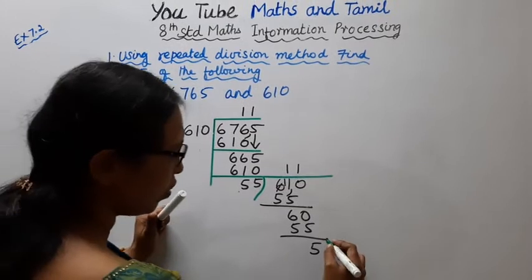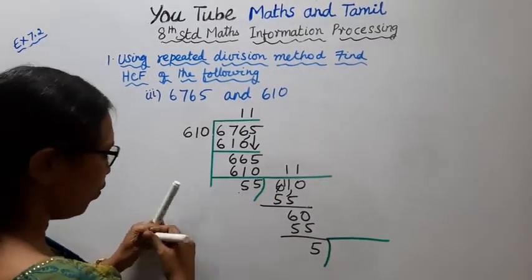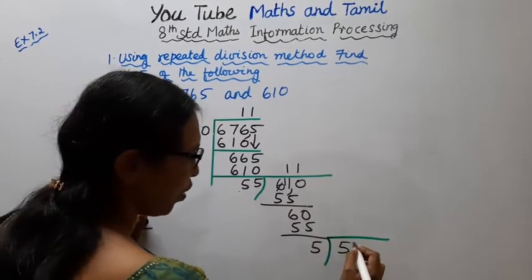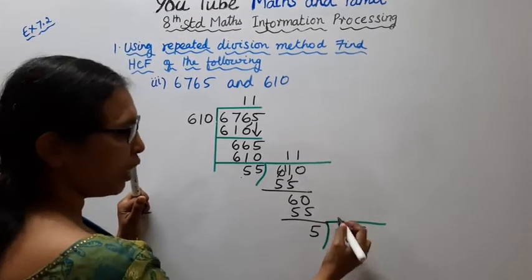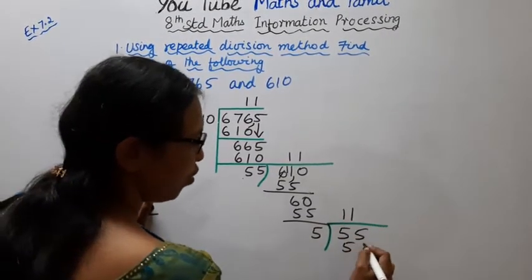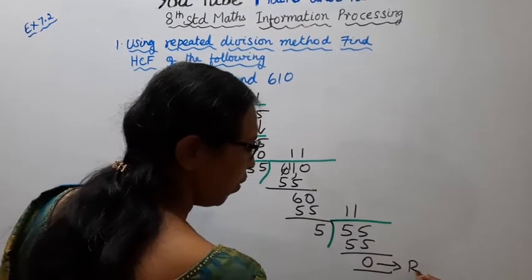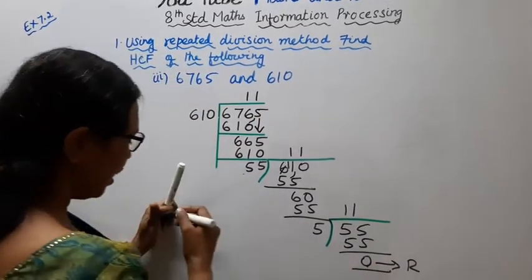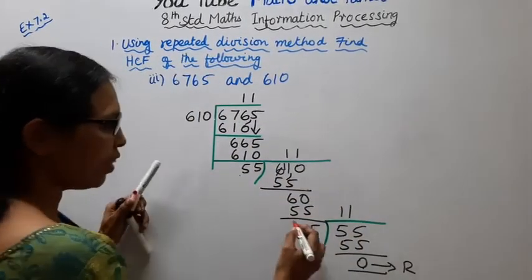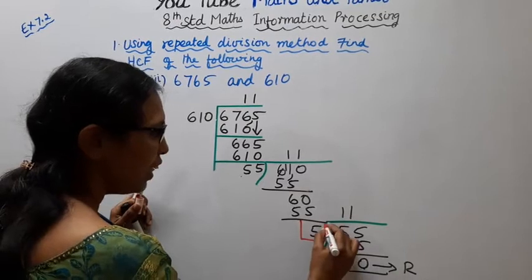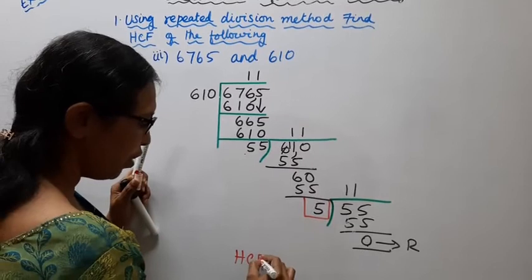Now divide 55 by 5. 55 divided by 5 - 5 goes 11 times. 11 into 5 is 55. Remainder is 0. When remainder becomes 0, the last divisor is our answer. The remainder is 0, so the last divisor is 5. Therefore, HCF = 5.